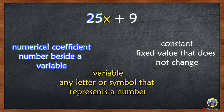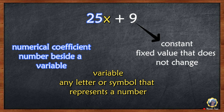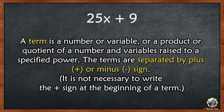A numerical coefficient is the number beside a variable. A variable is any letter or symbol that represents one or more numbers. A constant has a fixed value that does not change. A term is a number, a variable, or a product or quotient of a number and variables raised to a specified power. Terms are separated by a plus or minus sign. 25x plus 9 has two terms: 25x and 9.